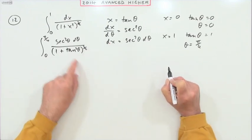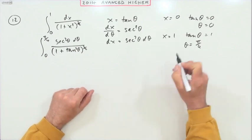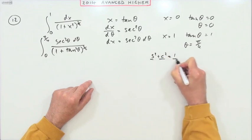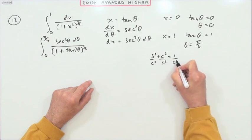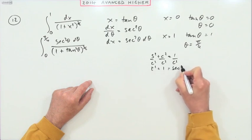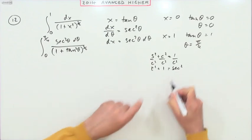Now 1 plus tan squared θ, you remember that connection from sine squared plus cos squared equals 1. Dividing them all by cos squared gives you tan squared plus 1 equals sec squared. So 1 plus tan squared is sec squared.